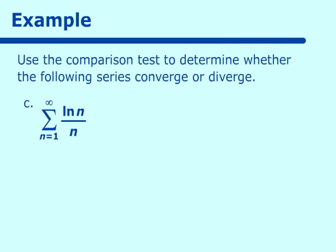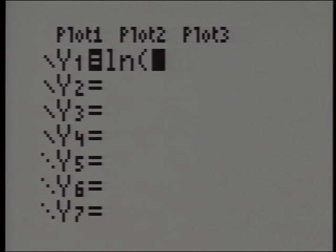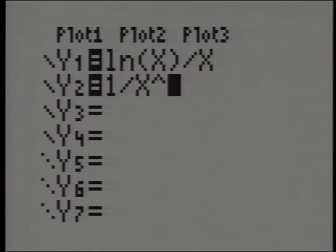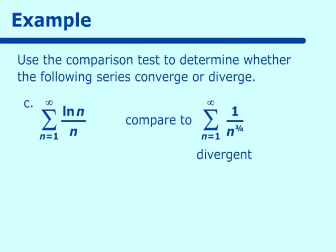For ln of n over n, we compare it to 1 over n to the 3/4 power, which we know to be divergent because the exponent is less than 1. In our calculator we enter ln(x)/x and compare to 1/x^0.75. Looking at the table, the comparison series is smaller than the original — exactly what we want for divergence, since we need d sub n to be smaller than a sub n. Because the series we're comparing it to is divergent and smaller, the original series is also divergent.